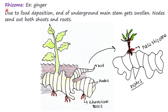Rhizome — the example of a rhizome is ginger. In this case, the main stem goes underground, becomes swollen, and grows horizontally, which is known as ginger. These are the nodes from which roots arrive.